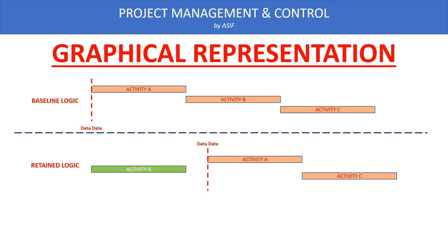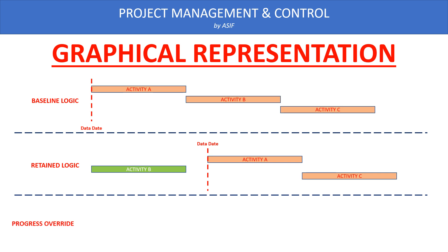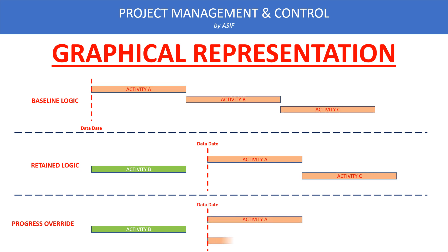Under Retain Logic, since A is linked with B and B is linked with C, any delay in A will flow through to B and then to C. In Progress Override, the delay of Activity A will not show in the future activities — Activity B and C can start at the same time, and the delay of Activity A only affects Activity B, which is already completed. So this delay will not impact the program calculations.